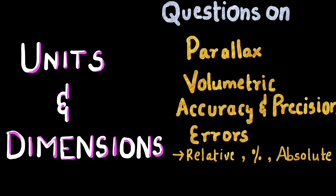We are going to see questions on parallax, volumetric method, accuracy and precision, and calculations related to errors such as relative error, percentage error, and absolute error. All these topics are going to be discussed in the format of question solving. This is the chapter: units and dimensions.